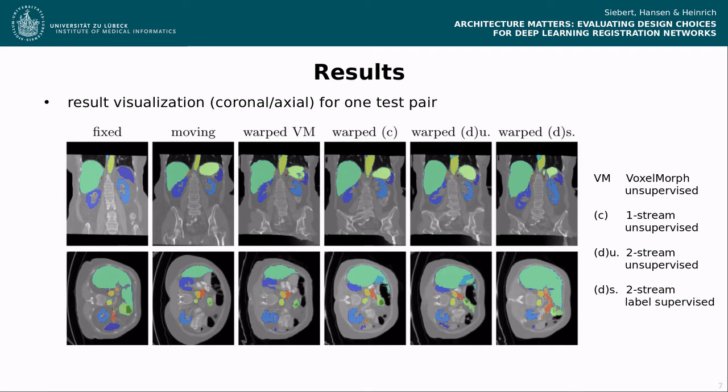This slide visualizes quantitative results for one image pair, warped using VoxelMorph, our unsupervised one-stream and two-stream architecture, and our label-supervised two-stream method.